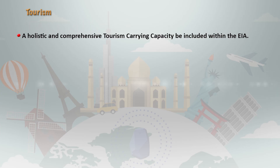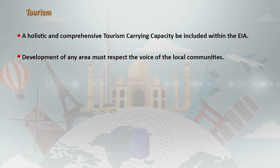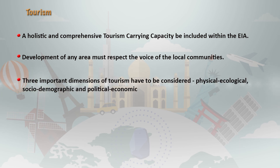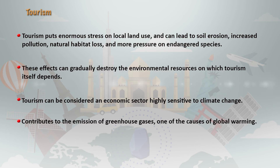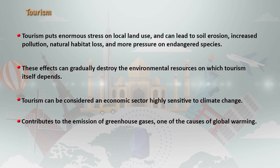A holistic and comprehensive tourism carrying capacity should be included in the environmental impact assessment study, and the development of any area must respect the voice of local communities. Three important dimensions of tourism to consider include the physical, ecological, socio-demographic, and political economic factors. Tourism also puts enormous stress on local land use, which can lead to soil erosion, increased pollution, habitat loss, and pressure on endangered species. It can destroy the environmental resources on which tourism itself depends, and it contributes greenhouse gas emissions, one of the causes of global warming.